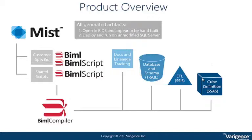Before going on to transformers I want to reiterate the product overview. On the top left we have MIST, which is what we're working in today. We're going to focus on the shared BIML scripts, which is where the transformers live. These are scripts you share across your entire organization - or if you're in a professional services consulting company, this is where you put your IP. Transformers allow you to obfuscate or remove your framework from the customer so that it's not visible while developing; it only comes together when you hit build. The customer-specific BIML scripts and shared scripts are passed to the BIML compiler, which produces documentation, database schemas, SSIS ETL, cubes, and analysis services.